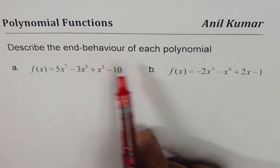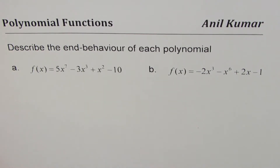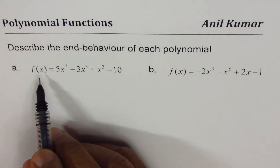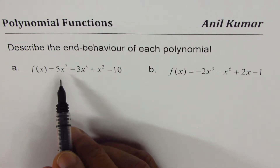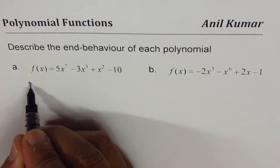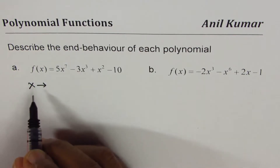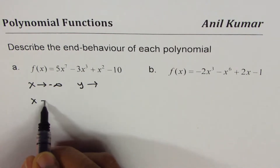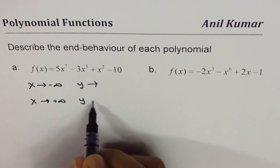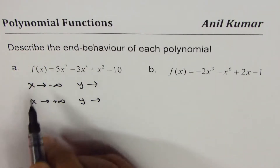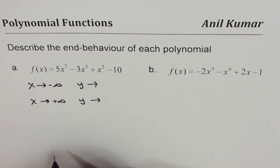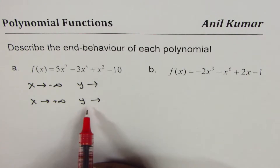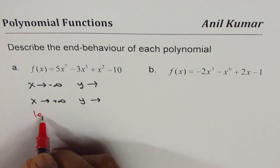We need to write the end behavior for each polynomial. End behavior really means how the y-value of the function changes or approaches when we are approaching a very large value for x. So if x is approaching negative infinity, what happens to the y-value? And if x is approaching positive infinity, what happens to the value of f(x)? End behavior is determined by the leading term — we have to identify the leading term.